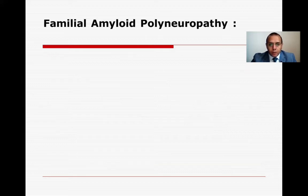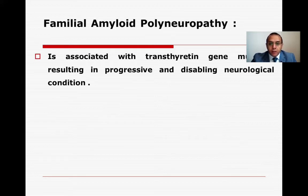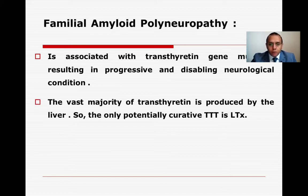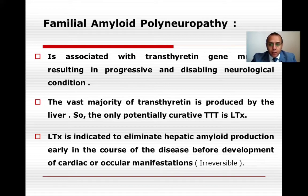Familial amyloid polyneuropathy is associated with transthyretin gene mutation, resulting in a progressive and disabling neurological condition. The vast majority of transthyretin is produced by the liver, so the only potentially curative treatment is liver transplantation. Liver transplant is indicated to eliminate hepatic amyloid production early in the course of the disease, before development of ocular or cardiac manifestations, as these are not reversible after transplant.